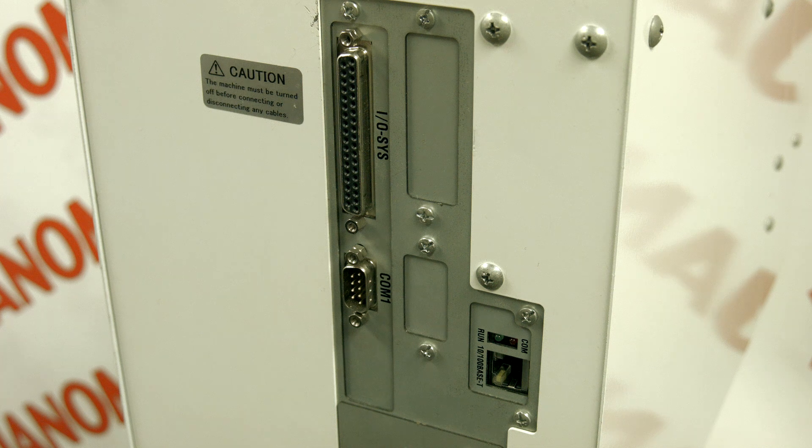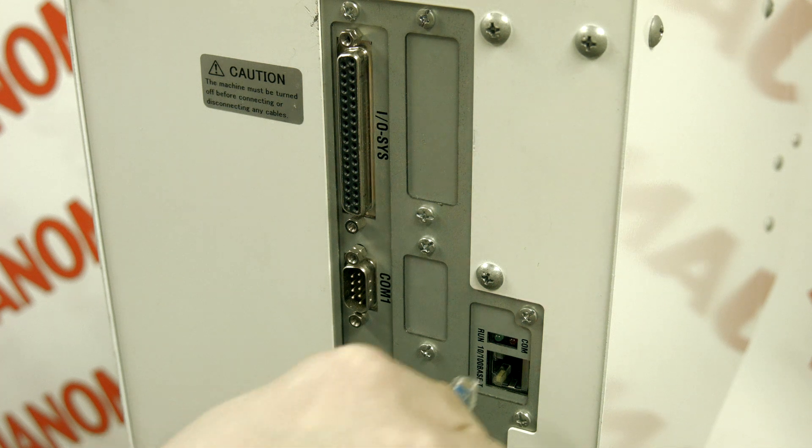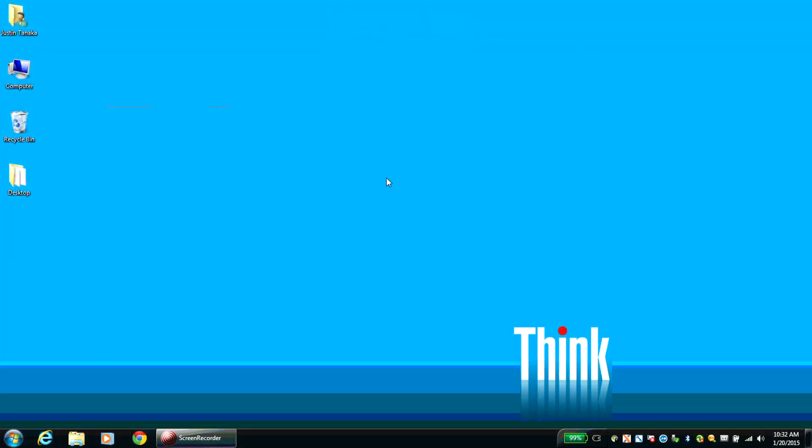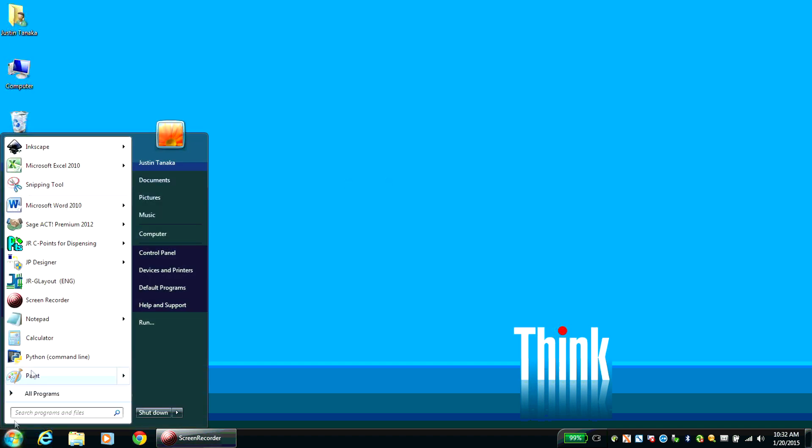COM communication via RS-232C is standard with all JP4 models. Ethernet is an optional communication method that we will cover in this video. To ensure successful communication, manually set your PC IP address.